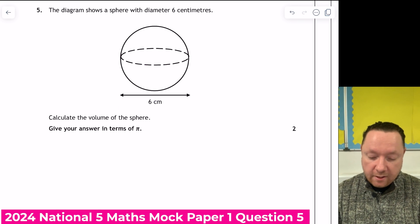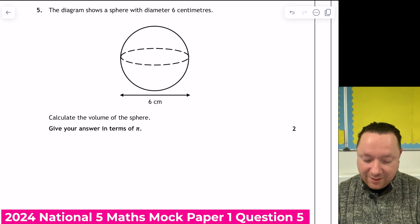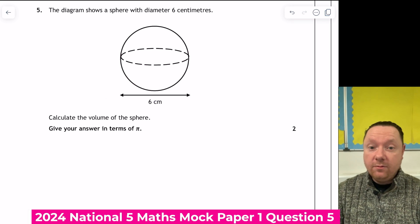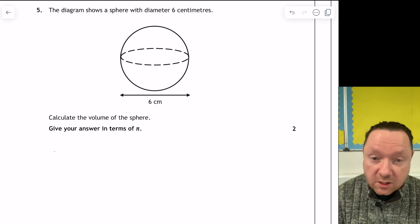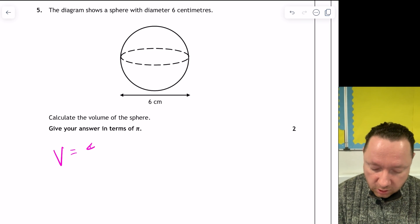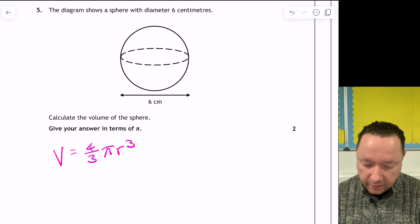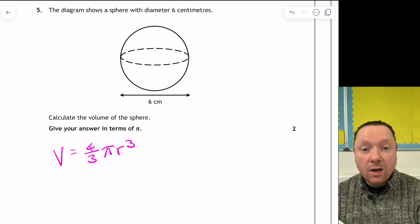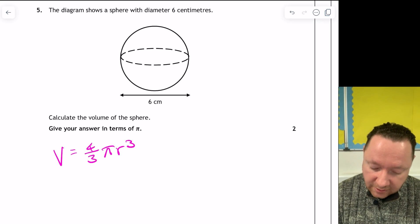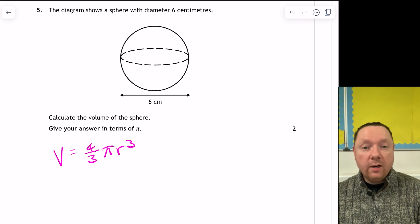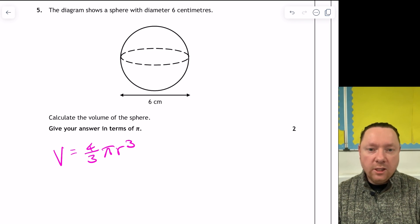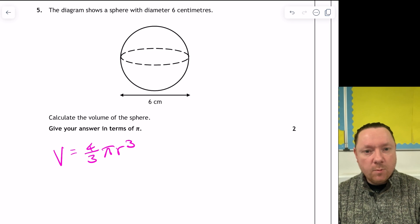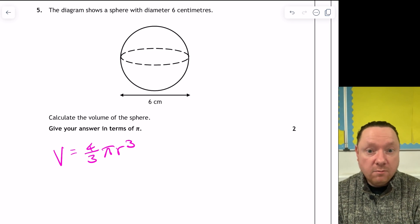Question 5. The diagram shows a sphere with diameter 6 centimetres. Find the volume of the sphere. And I don't even mind myself to watch my units here because this is where I always mess my units up. So volume of a sphere from the start of the exam paper is 4 thirds pi r cubed. Notice it's 4 thirds. Make sure you've got a cubed on the end, not squared. That's for a cone.